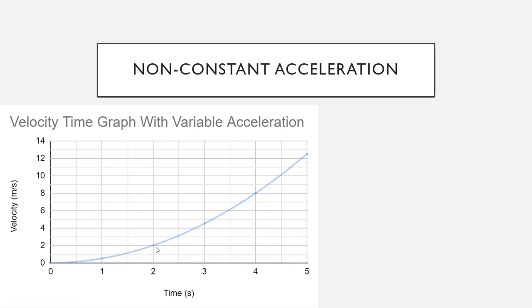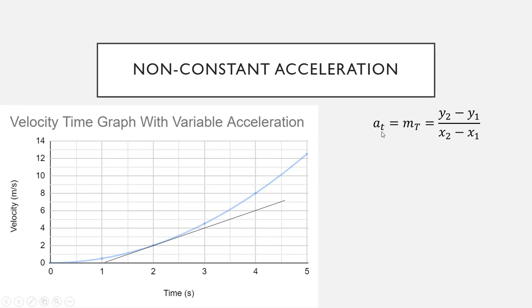What we need to start by doing is drawing a tangent. A tangent is a line that touches the curve at only one point, and the point where it touches is the point you're interested in. We are interested in finding the acceleration at t equals 2, so I've drawn a tangent at t equals 2. The way that we find the acceleration at this time is to find the gradient of that line. The formula for the acceleration at a specific time is the gradient of the tangent drawn at that time, which comes from the change in y divided by the change in x.